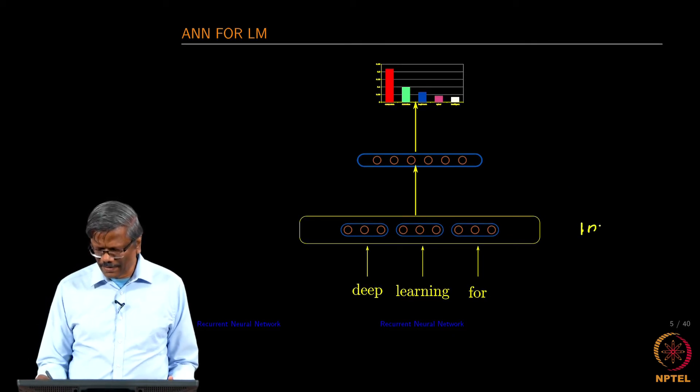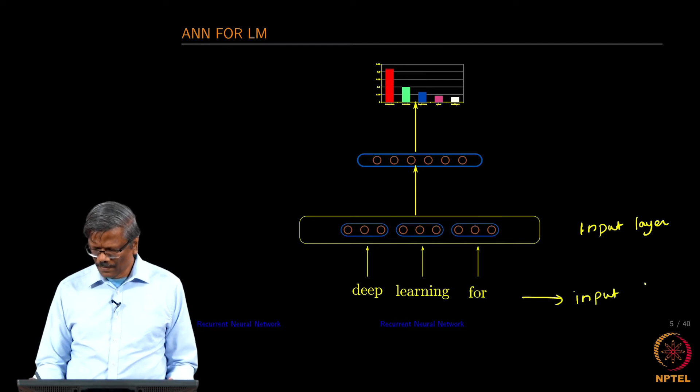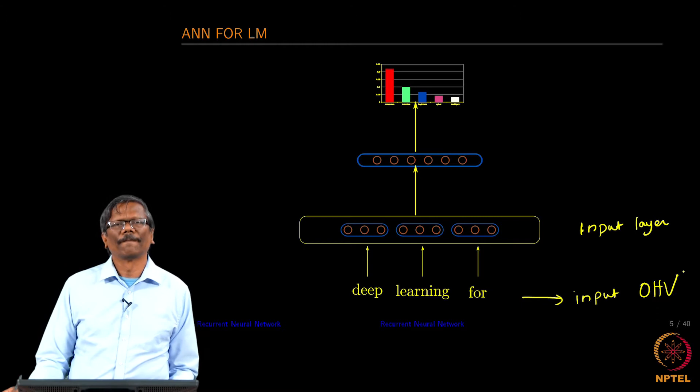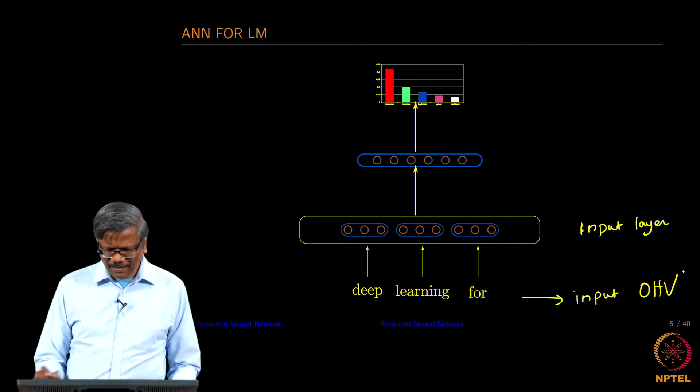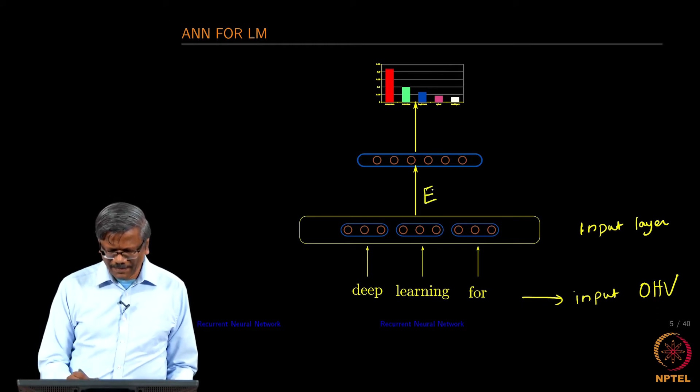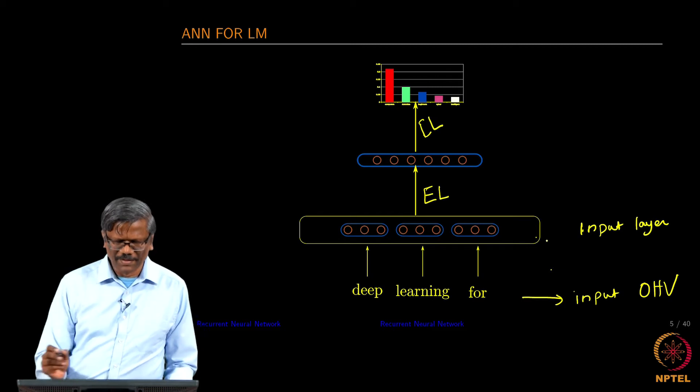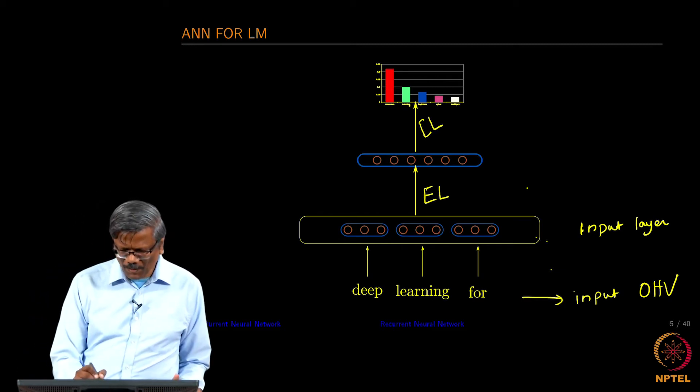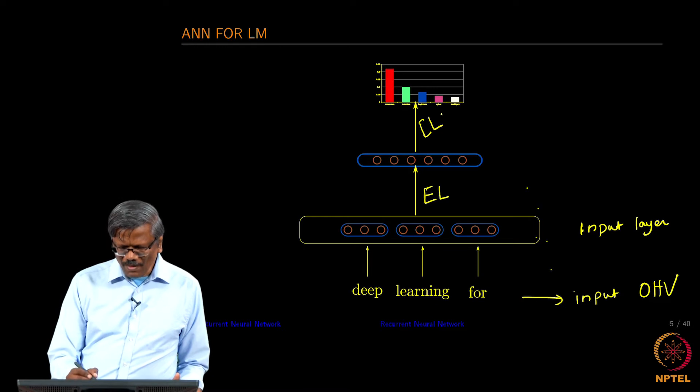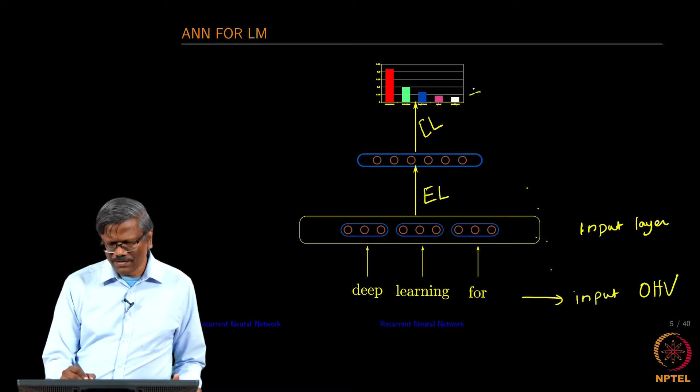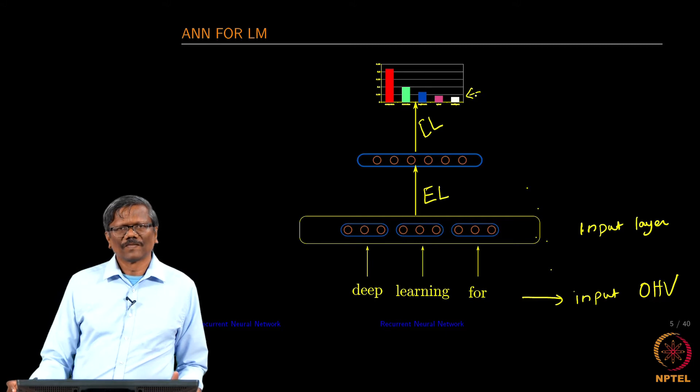We have the input layer here and then this is your input in one hot vector form. And then we have the embedding layer and this is your context layer. Remember we have used the terminologies earlier and then this is your output through this softmax.